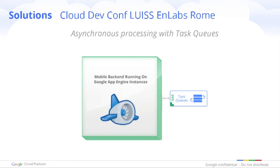Other features you may need from the cloud backend for your application include asynchronous processing. You can use Task Queues, which are a top component in App Engine — you can create tasks, store them, and they will execute so you can run your batches.